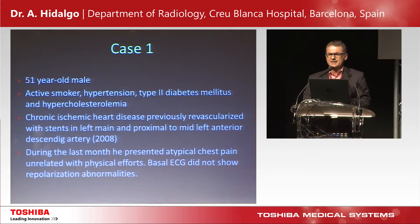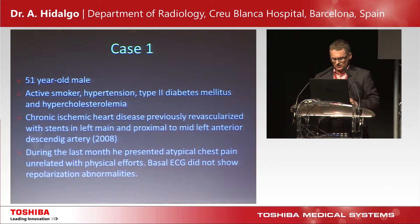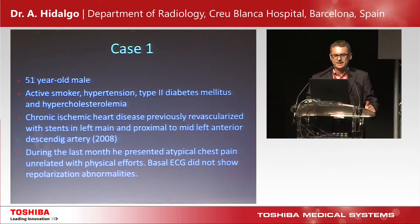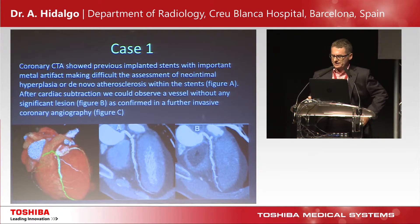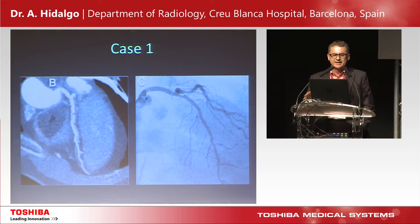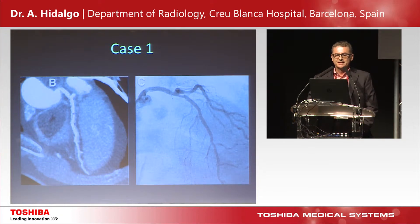The first case is a 51-year-old male, an active smoker with hypertension. He had chronic ischemic heart disease that was previously revascularized, and during the last month he presented with atypical chest pain. The resting ECG did not show repolarization abnormalities. On the CTA, you can see the stent, and it is difficult to evaluate whether there is neointimal hyperplasia. On the subtracted images, and when comparing with invasive coronary angiography, you can confirm there is no significant lesion in this vessel.